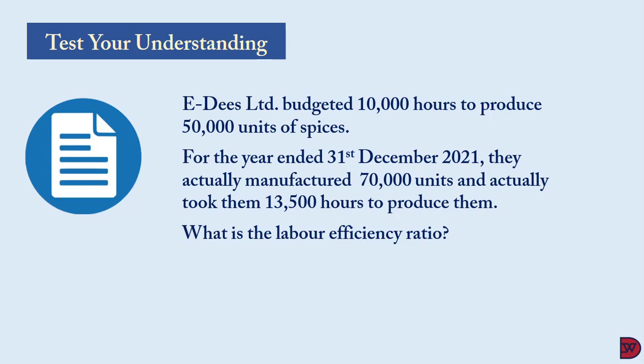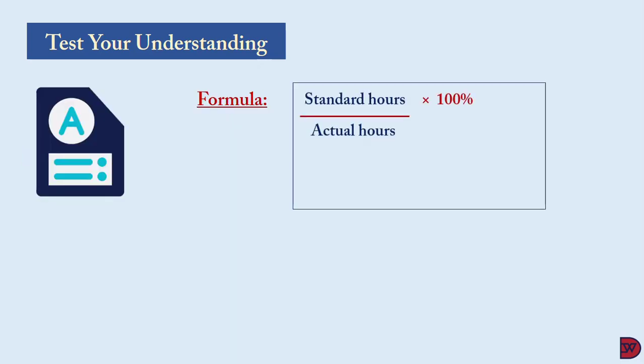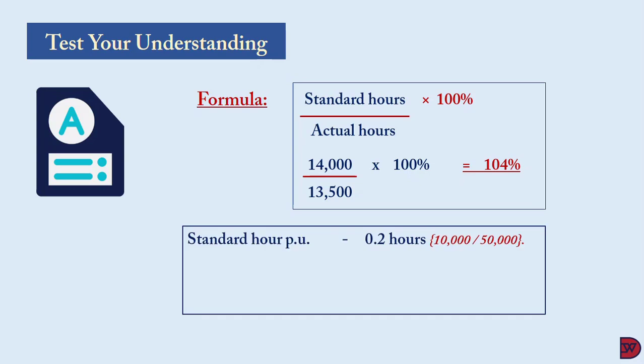Let's test understanding: GKE Limited budgeted 10,000 hours to produce 50,000 units of spices for the year ended 31 December 2021. They actually manufactured 70,000 units and it took them 13,500 hours. What is the labor efficiency ratio? The formula is standard hours divided by actual hours, multiplied by 100. Standard hours are 14,000, divided by 13,500, multiplied by 100, giving 104 percent — meaning labor was more efficient than expected.